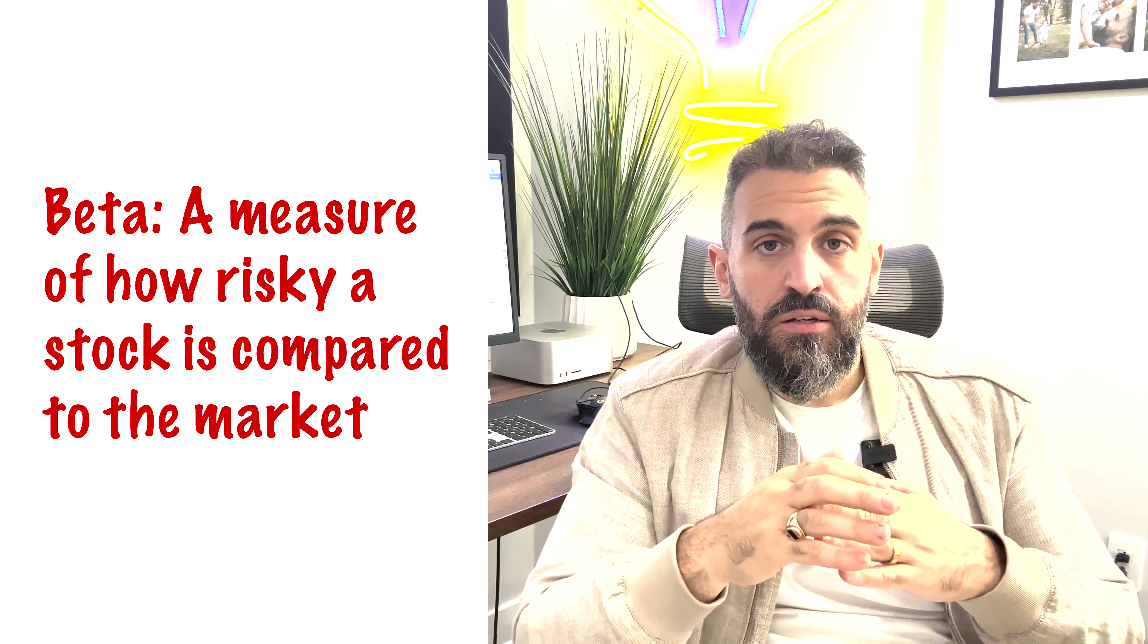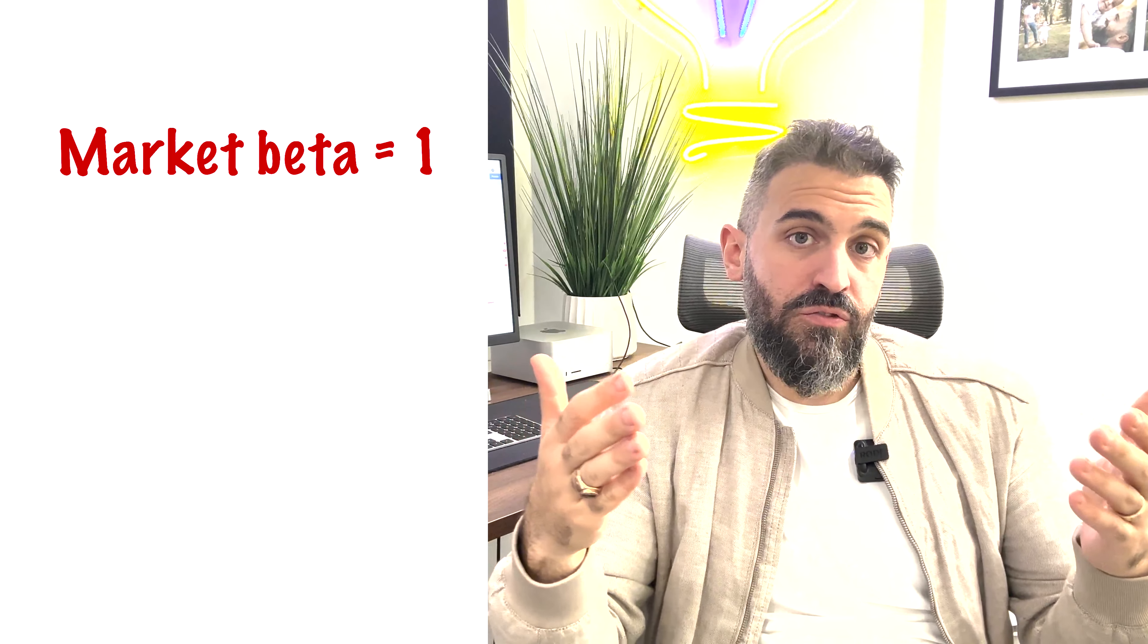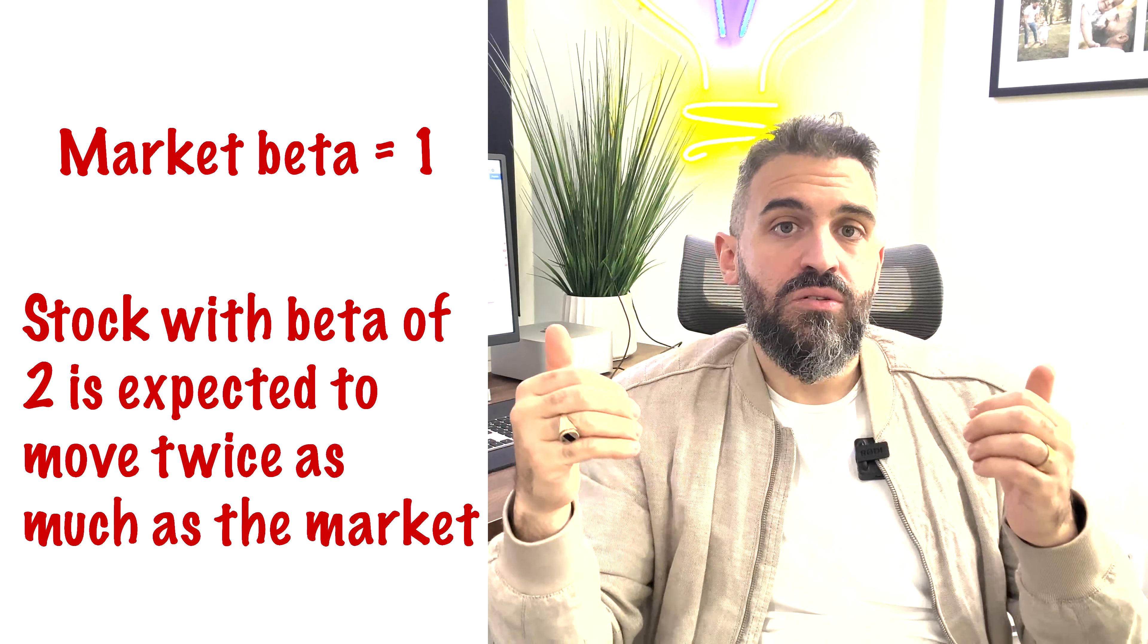Now one way to measure that is the beta. Beta is a value that is compared to the value one - think of the market as having a beta of one. Now if a stock has a beta of two, it means it is two times more volatile or two times more risky, or it moves two times more than the market. So we expect that the stock will increase by twice as much as the market when the market is going up, and we expect that the stock will decrease twice as much as the market when the market is going down. So say the market today went up three percent, a stock with a beta of two is expected to have gone up six percent.